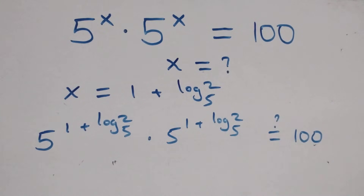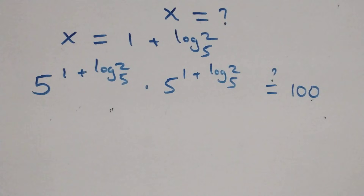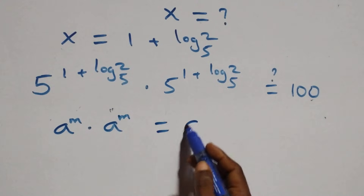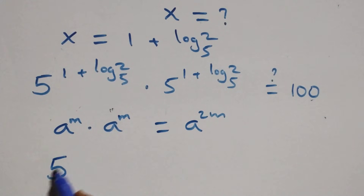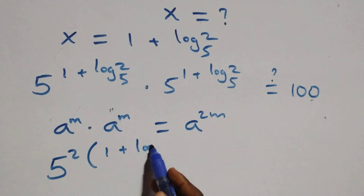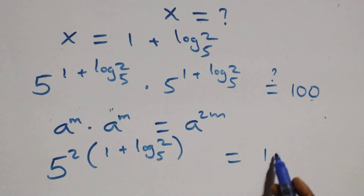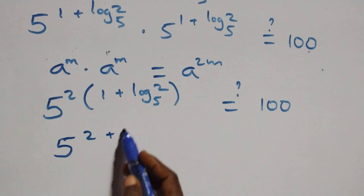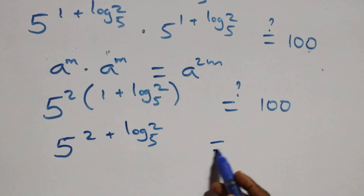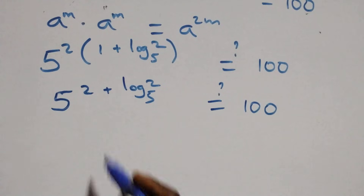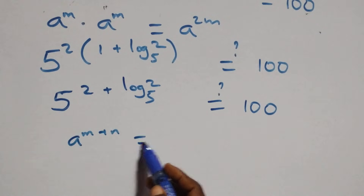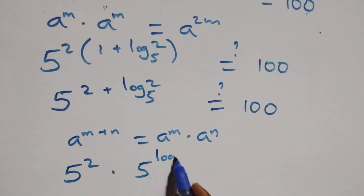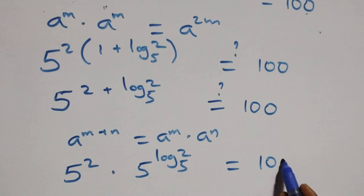Now let's verify this satisfies the original equation. Substituting x equals 1 plus log₅2, and using the same-base multiplication rule — a to power m times a to power n equals a to power m plus n — we have 5 raised to power 2 times (1 plus log₅2). Opening the bracket: 5 raised to power 2 plus 2·log₅2. Applying the exponent addition rule a^(m+n) = a^m times a^n, we get 5 squared times 5 raised to power 2·log₅2.